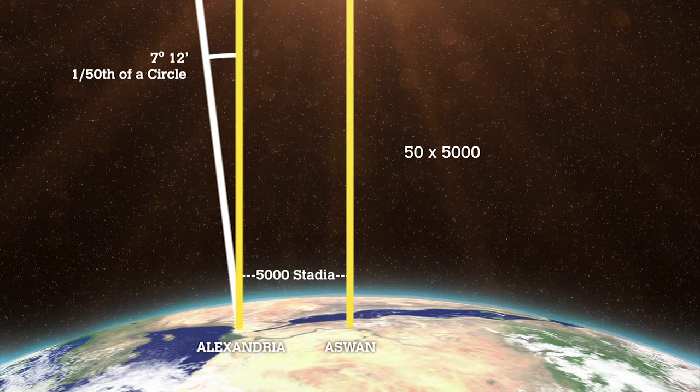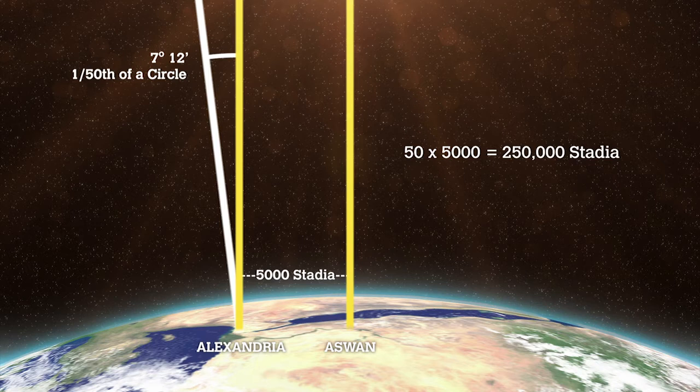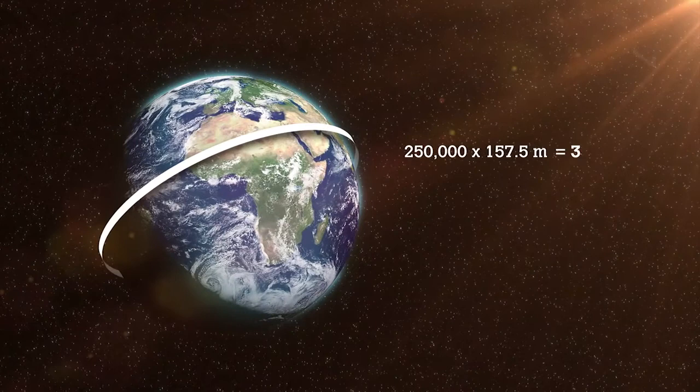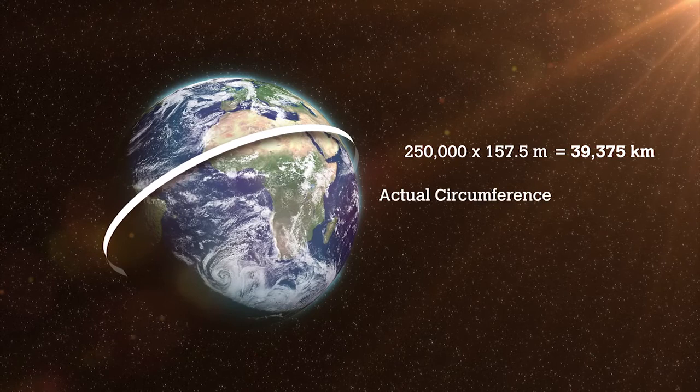One Egyptian stade is equal to 157.5 meters, giving a final circumference of 39,375 kilometers. The actual figure is 40,075 kilometers. Eratosthenes was 98% accurate.